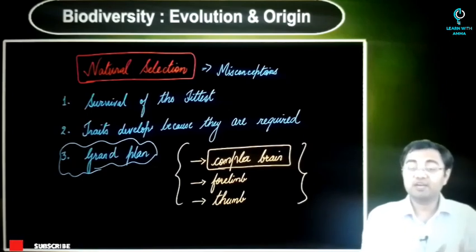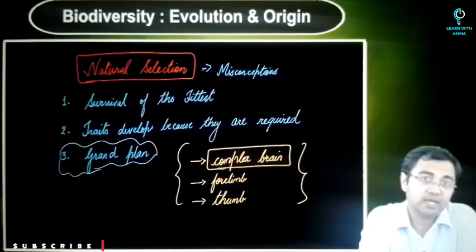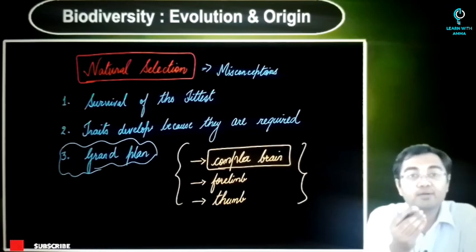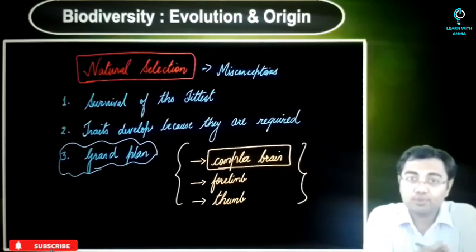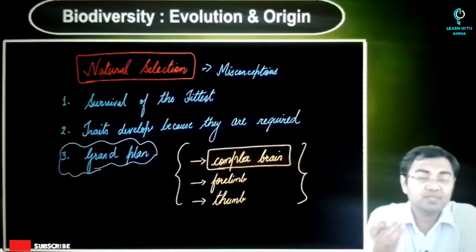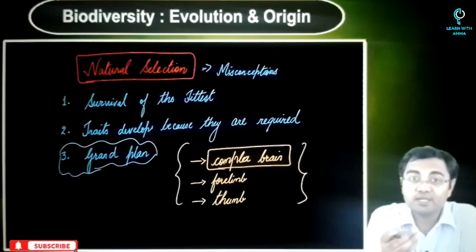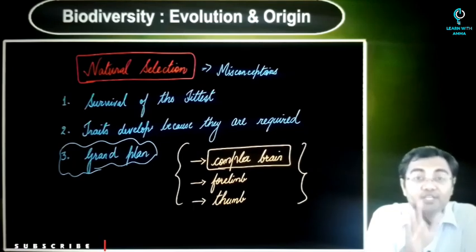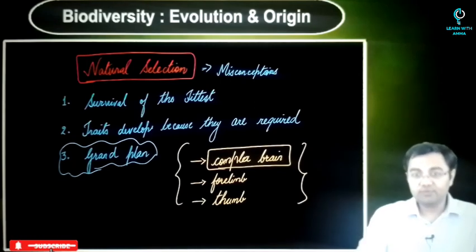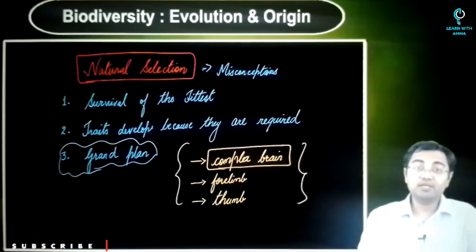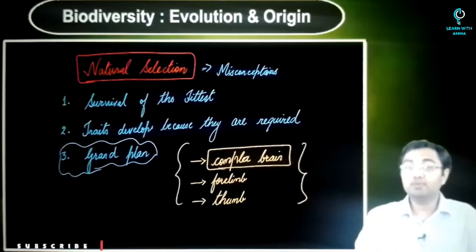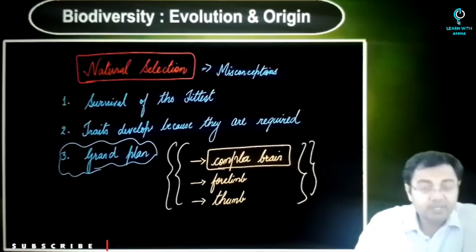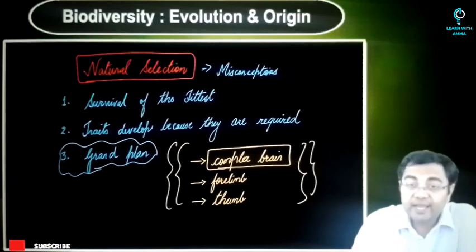These traits make humans the species able to survive better than many other organisms. But that does not mean we are the best organisms. After COVID, when coronavirus came into the picture, all of a sudden we did not have answers to something so tiny and not even visible — we had to take all the precautions in the world just to survive. So we cannot say we are the best species or the pinnacle, but we have been able to survive better than most other species because of these three important traits.